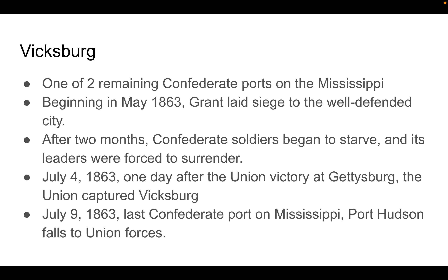Union successes kept building. By 1863, there were two remaining Confederate ports on the Mississippi River, one being Vicksburg, Mississippi. Grant laid siege to the city for two months, surrounding it until Confederate soldiers began to starve and were forced to surrender. On July 4th, 1863 — one day after the Union victory at Gettysburg — the Union captured Vicksburg. The last Confederate port, Port Hudson, also fell shortly after. By 1863, every single port city on the Mississippi River was under Union control.